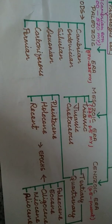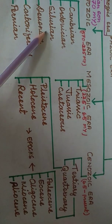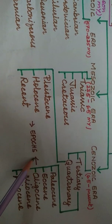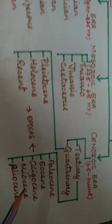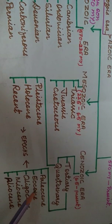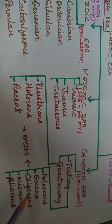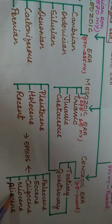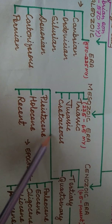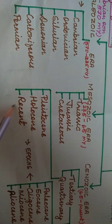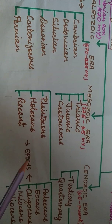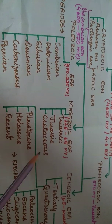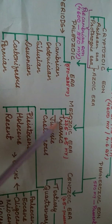These periods are further divided into Epochs. For Paleozoic and Mesozoic, there are no epochs listed. Epochs appear under Cenozoic — under Tertiary: Paleocene, Eocene, Oligocene, Miocene, and Pliocene. Quaternary is divided into Pleistocene, Holocene, and Recent. We are currently in the Recent epoch. This is the simplified version of the geological time scale table.